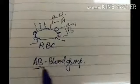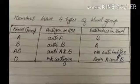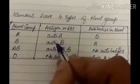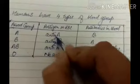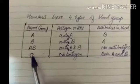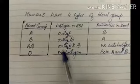A person with blood group O has no antigen on their RBC — neither A nor B. To summarize in a table: blood group A has antigen A, blood group B has antigen B, blood group AB has both antigen A and antigen B, and blood group O has no antigen.